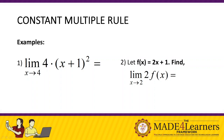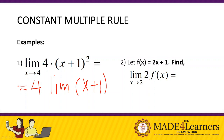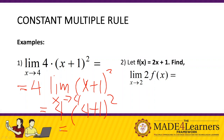Example number one: the limit of 4 times (x + 1)² as x approaches 4. Using the Constant Multiple Rule, we have 4 times the limit of (x + 1)² as x approaches 4. Then using the Substitution Rule, we substitute x = 4: 4 times (4 + 1)² = 4 times 5² = 4 times 25 = 100. The answer is 100.